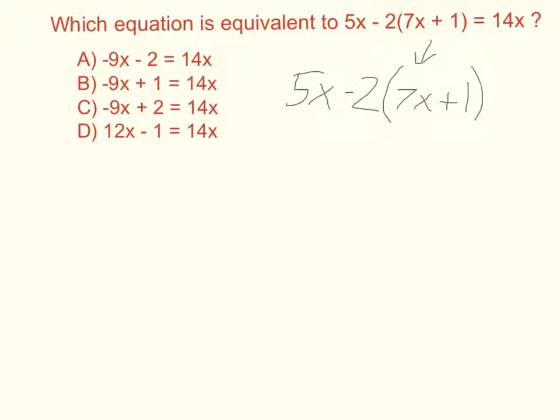I've rewritten the expression on the left hand side and what I see here is that none of my possible answers have parentheses. So I want to get rid of my parentheses by distributing. I'm going to multiply minus 2 by the 7x and by the 1. So that's going to give me 5x unchanged, minus 2 times 7x is minus 14x, and minus 2 times 1 is minus 2.